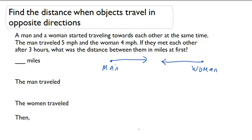What we need to find is the distance that the man travels and add it to the distance that the woman travels, and we will be able to find out how far they were before they started walking towards each other. First,